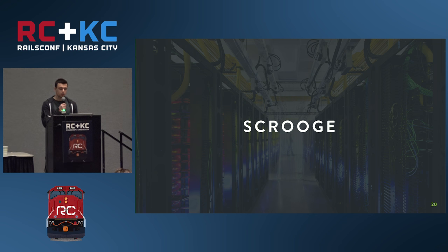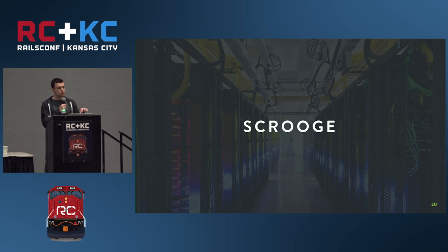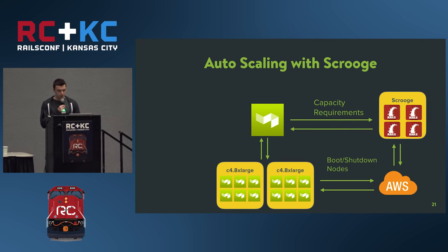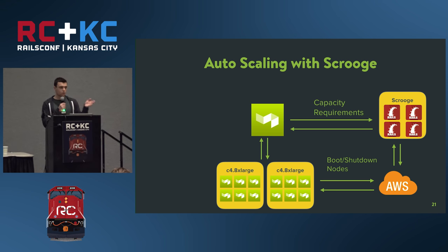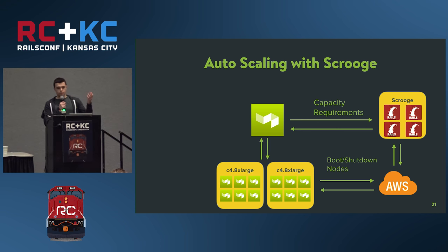We couldn't use Amazon's auto-scaler because it only works on HTTP requests, so we wrote our own — a simple Rails app called Scrooge. It polls Buildkite for the currently running agents and checks how many are required based on the number of builds Buildkite needs to run. Scrooge then boots up new EC2 machines or scales down accordingly.